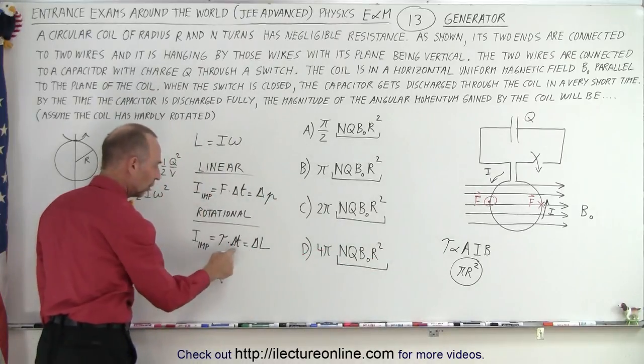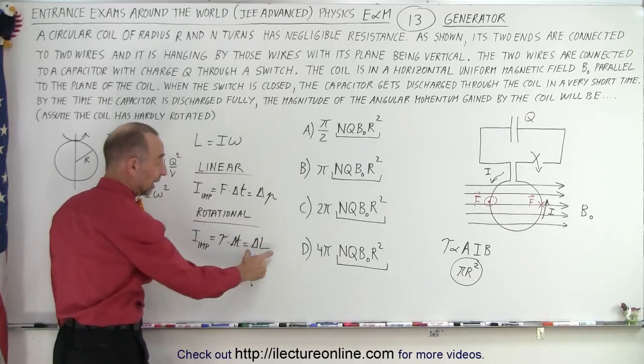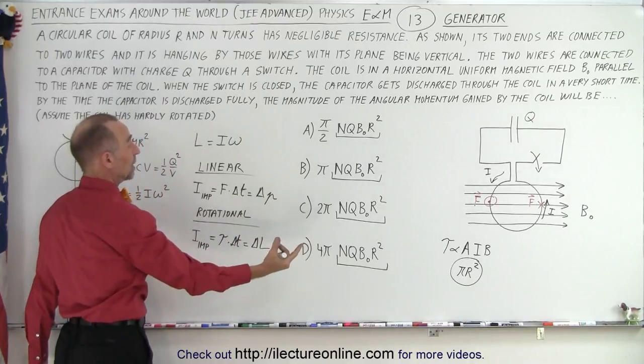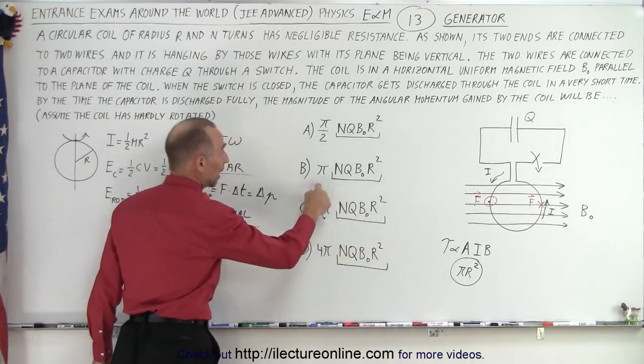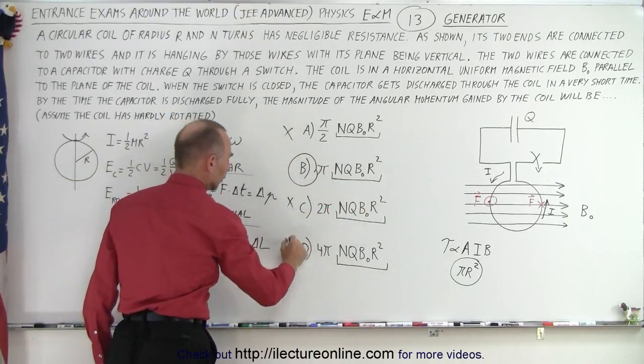The only difference is we also have a torque which is proportional to the area, which is πr². So we have an r² there. We need a π. Since we need a torque to get a change in angular momentum, the answer then would be that the area is πr². So I vote for B, and I don't think these are correct.